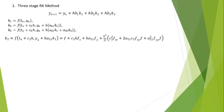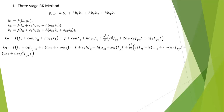Since we are operating at the third stage, we stop at the third-order terms of the Taylor expansion. The Taylor expansion of k₃ is: f plus c₃h·f_t plus h(a₃₁ plus a₃₂)·f_y plus (h²/2)(c₃²·f_tt plus 2(a₃₁ plus a₃₂)c₃·f_ty plus (a₃₁ plus a₃₂)²·f_yy). Then substituting k₁, k₂, and k₃ gives the new update expression.